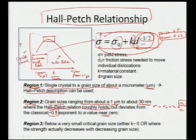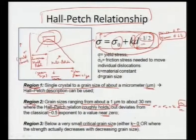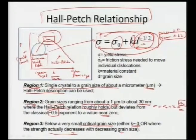If we go much below that — below a small critical grain size — we can see that k itself, the constant, can go to 0, or where the strength actually decreases. What is happening is k is also going to 0 and also our strength is actually decreasing as we decrease the grain size. So we are talking about this third region where there is a decrease in the yield stress as we lower the grain size.